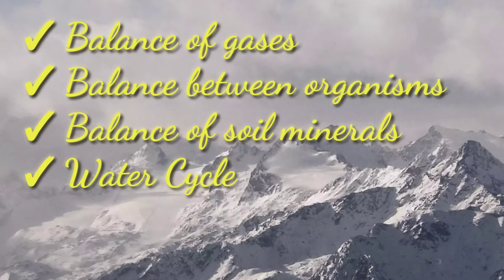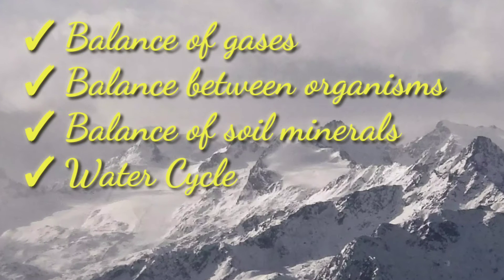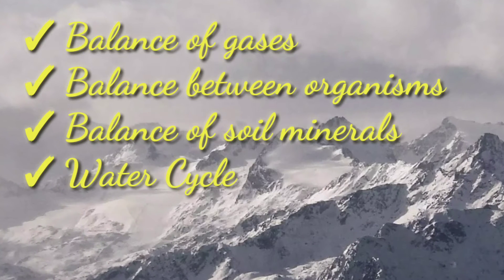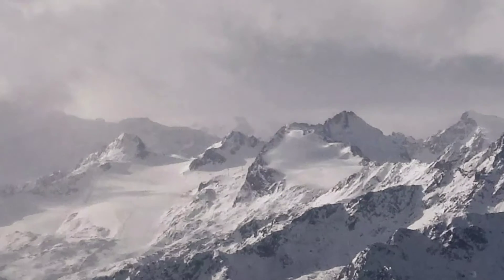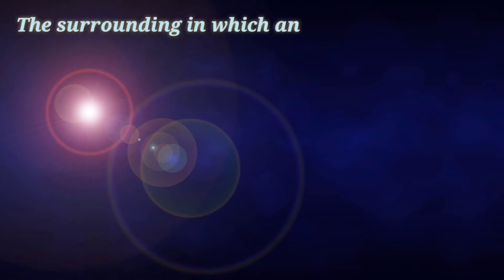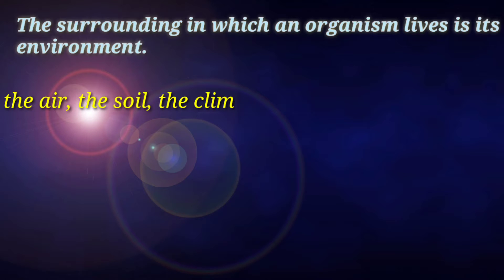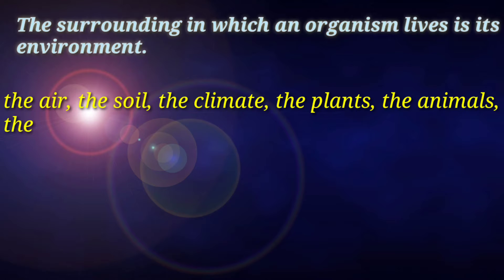Students, we are going to start today's session with a quick recap of what we have already learned in our previous class. We studied that the surroundings in which an organism lives is called its environment and it consists of the air, the soil, the climate, plants and the animals.